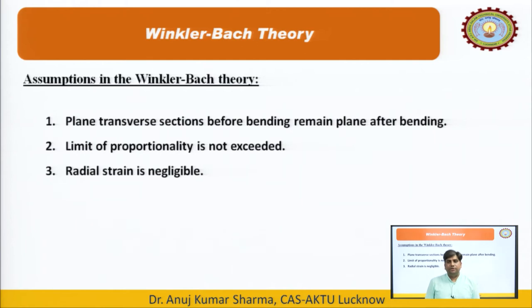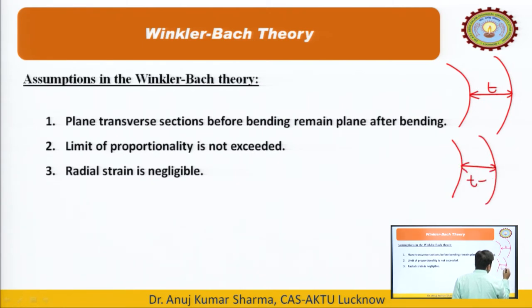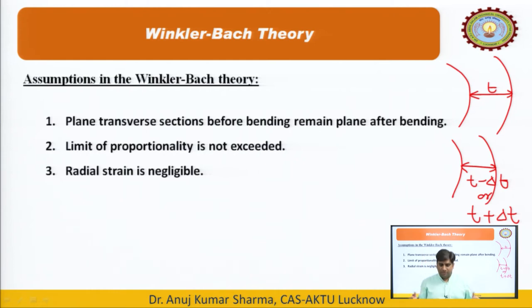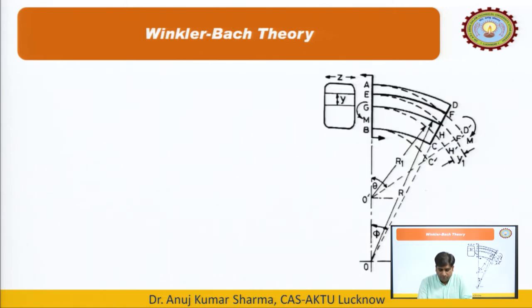The third assumption is that radial strain is negligible — meaning if the beam thickness is t, after straining it should not become t ± Δt; there should be no radial strain. The fourth assumption is that the material is isotropic and obeys Hooke's law — it should have the same properties in all directions.